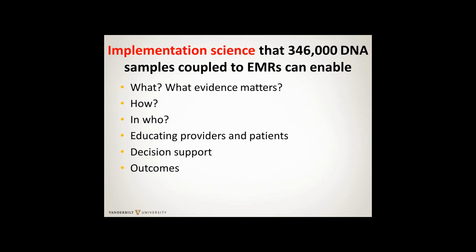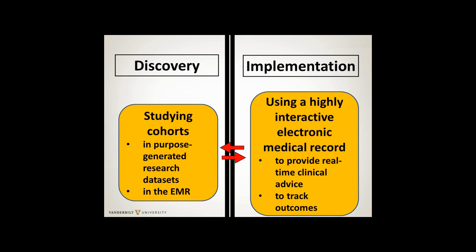For implementation science: if you're going to implement, you have to have evidence, and that evidence comes from the discovery side. How do you do it? In whom? Education issues, decision support issues, and tracking outcomes - if it's not us, who else? As we implement, we learn, and as we learn, we generate larger data sets. If you implement HFE in a very large cohort, you'll generate data on HFE that feeds back into the discovery side. It's not discovery or implementation - they each feed on each other, and we have to retain both. But we have to think about what kind of discovery we're uniquely positioned to do.